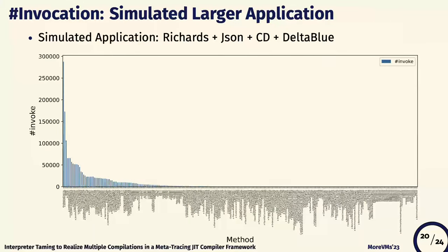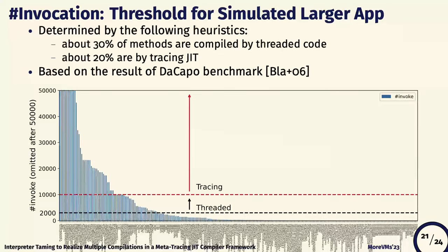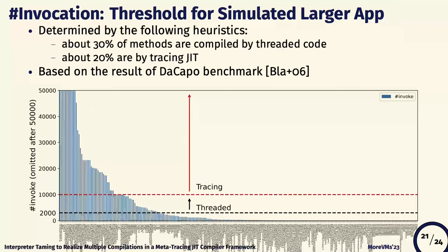This figure shows the number of invocations in the simulated real-world application. Similar to a real-world workload, this application has a long-tailed distribution of method invocations. The threshold for multi-level compilation was set by the following heuristics: about 30% of methods are compiled by threaded code, and 20% are compiled by tracing JIT. These heuristics are based on the results of the micro-benchmark.